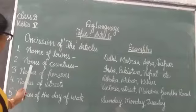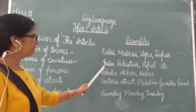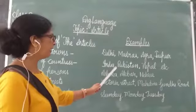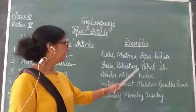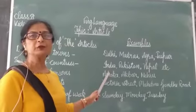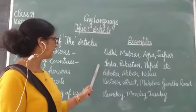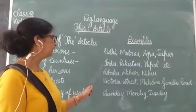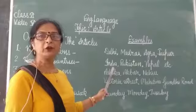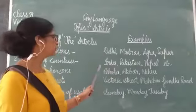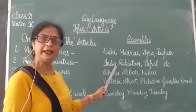Next is names of countries. Country names such as India, Pakistan, Nepal, etc. If we are talking about the names of a country, we will not use the article 'the'. Saying 'the India' or 'the Pakistan' will be wrong. In place of that, we will use only India, Pakistan, and Nepal.